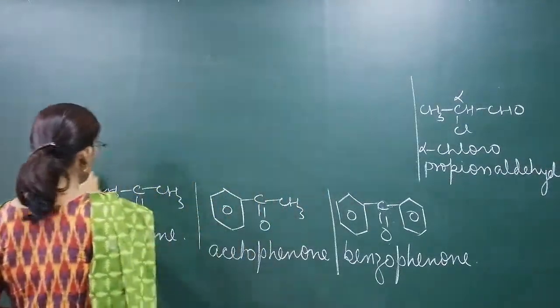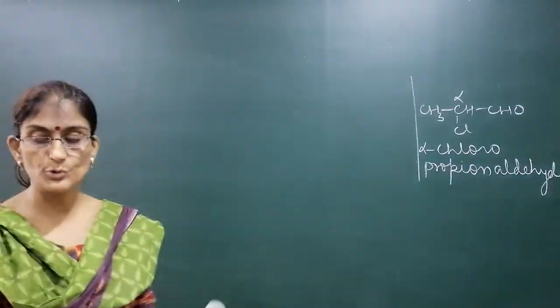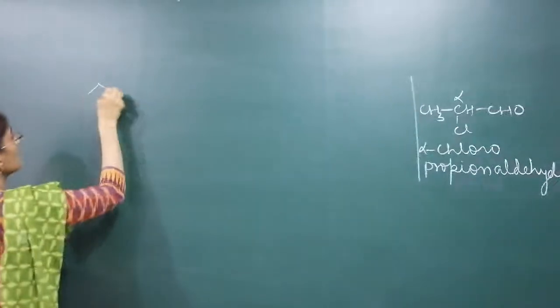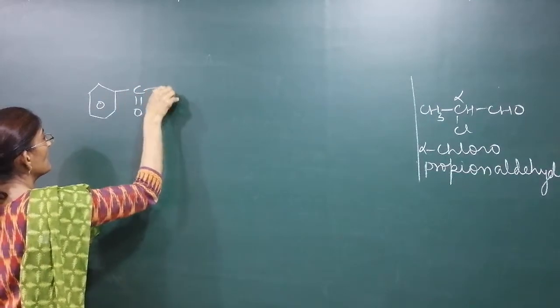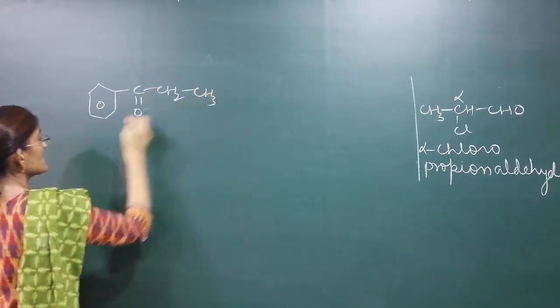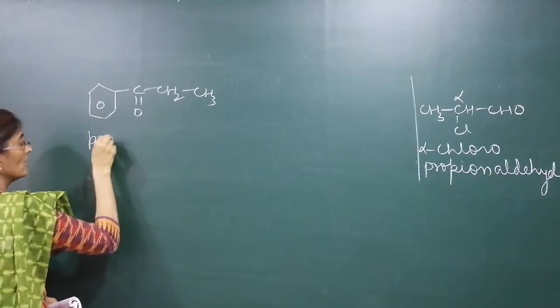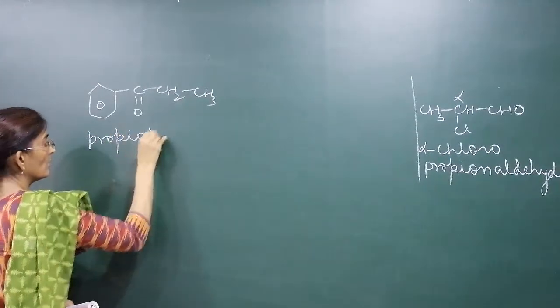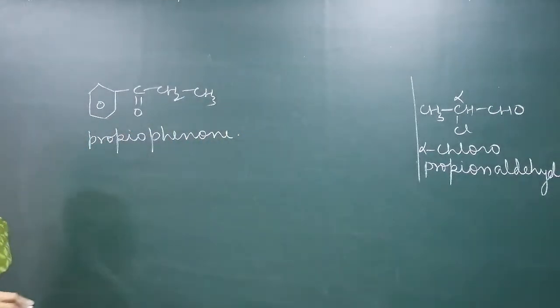One more common name: a benzene ring with –CO–CH₂–CH₃ is called propiophenone, because there are three carbon atoms on that side. In common names of ketones, we also use alpha, beta, gamma notation. The C=O group is in the middle of a ketone, with carbons on both sides.